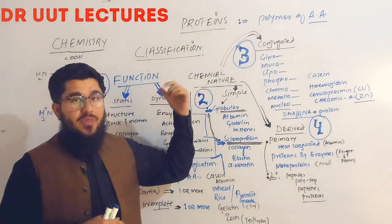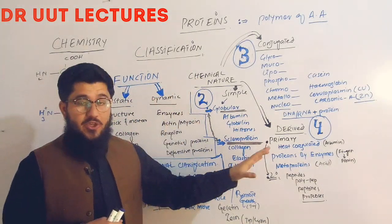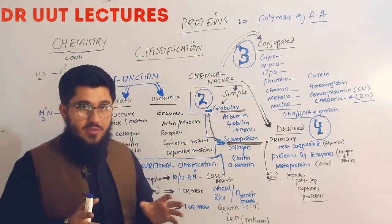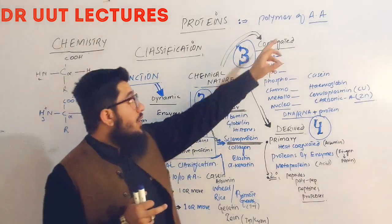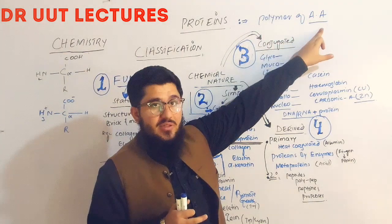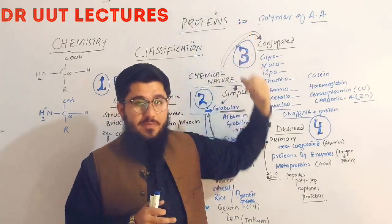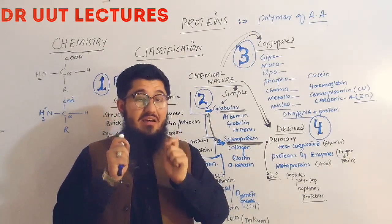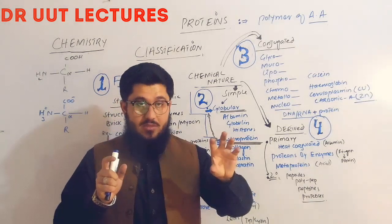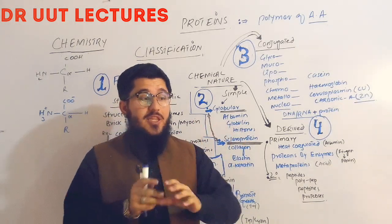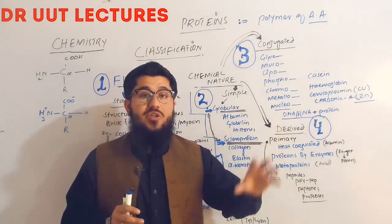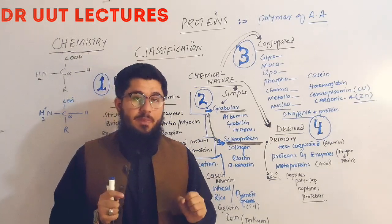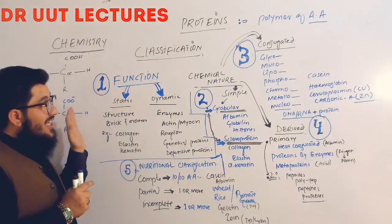We will talk about the definition of protein, the chemistry of protein, and the classification of protein. Starting from the definition: a polymer of amino acid is called a protein. When several amino acid monomers join together, they form a structure called protein. This is a simple, to-the-point definition of protein.